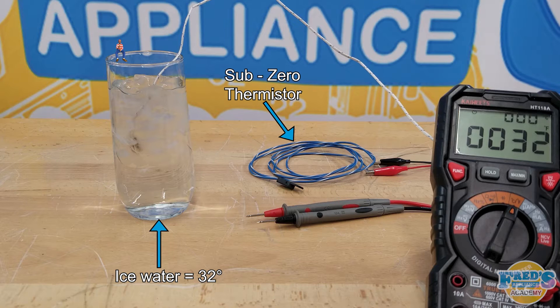Here we're going to be testing a Sub-Zero thermistor using a glass of ice water. Using ice water is an extremely accurate test for refrigerator thermistors as it will almost always be exactly 32 degrees.